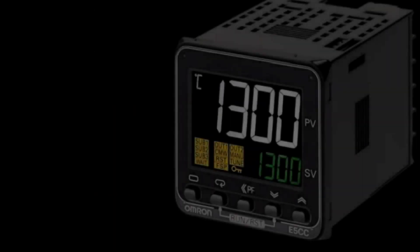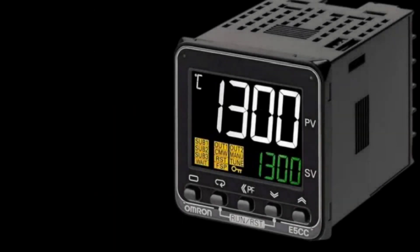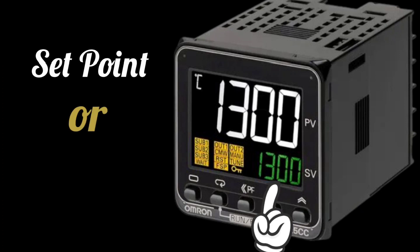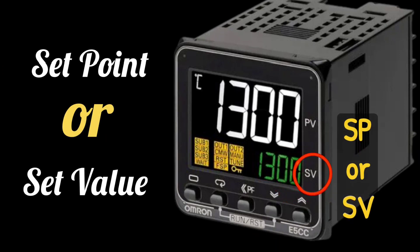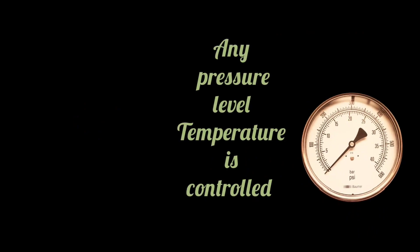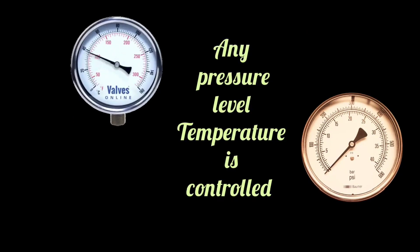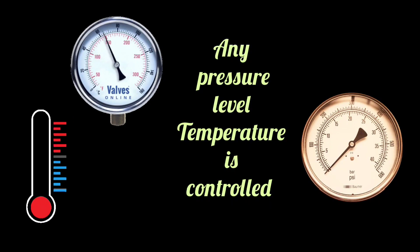In a PID controller, you can see the set point, or set value — SP or SV is written on it. This is the value on which pressure, temperature, and level are kept.